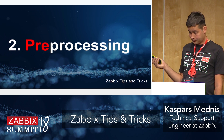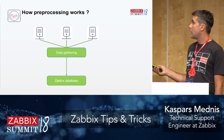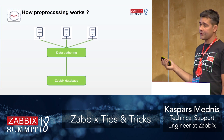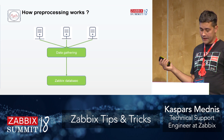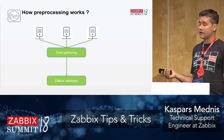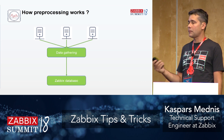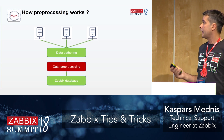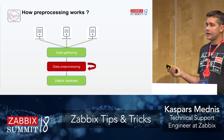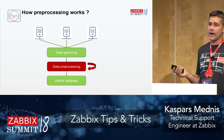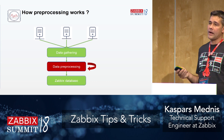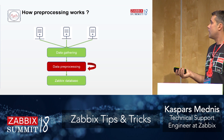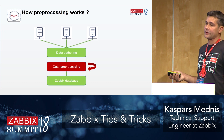Now we will continue to pre-processing — done before value storage. The typical scenario: we gather data from hosts and store it to the Zabbix database. But maybe we need to change the data — multiply, calculate delta, or extract some information. We can use data pre-processing for that, and we can use multiple steps. It works like a pipe: you can extract from regex, then multiply, then do other functions, and store the result in the Zabbix database.